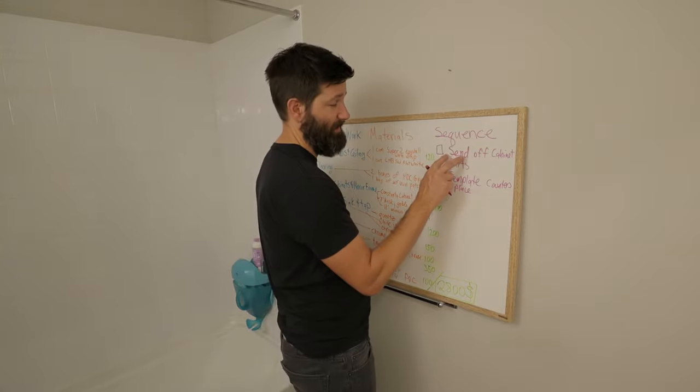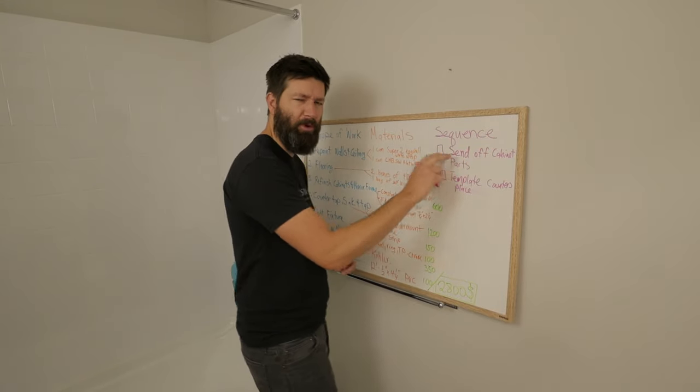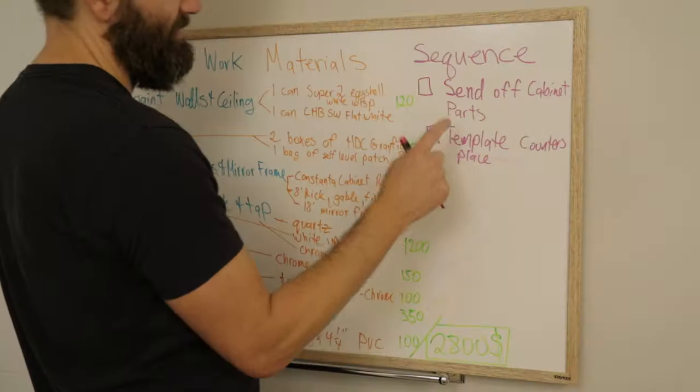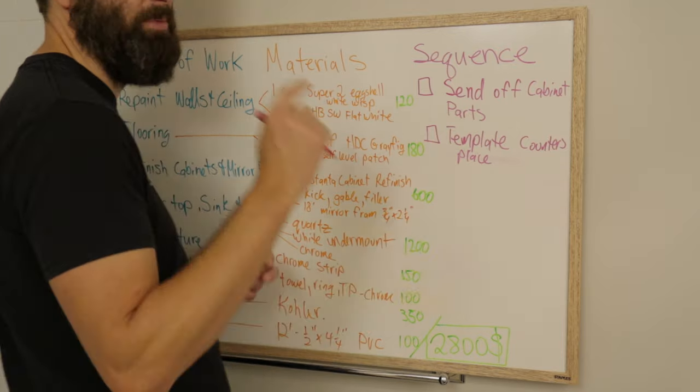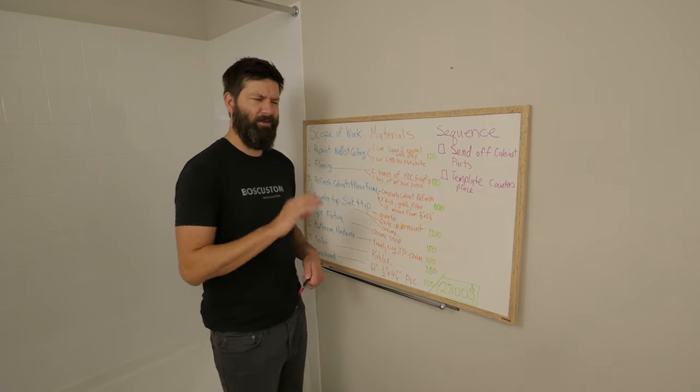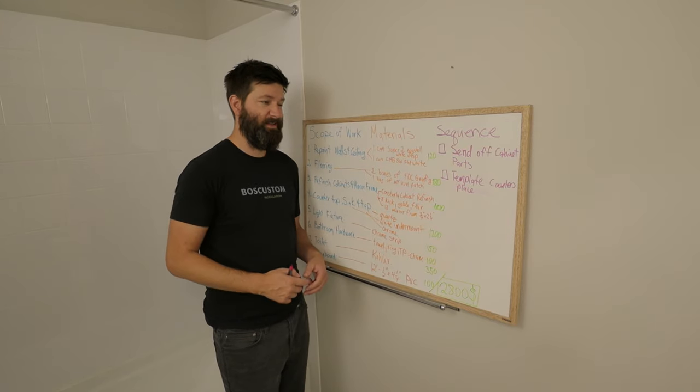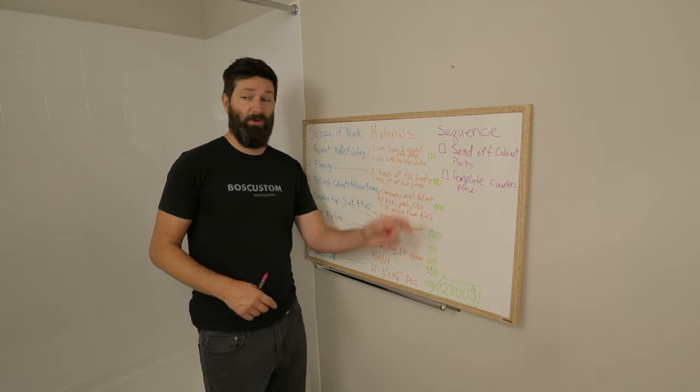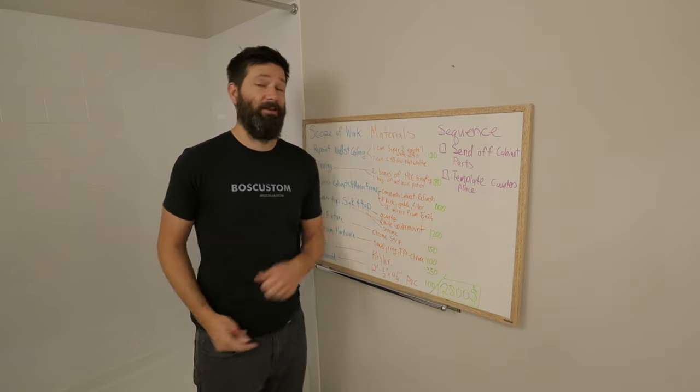Then the next thing up along the same lines as sending the cabinet parts in to get refinished is I'm going to template the countertops and place the order. That way, again, usually countertops take like a week or two weeks. Even if I get the countertop early, I can just put it in the hallway and it's good to go.